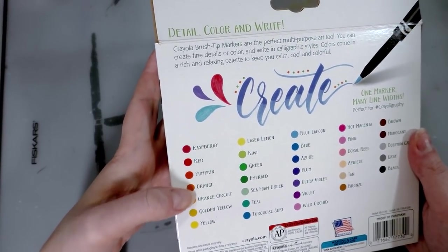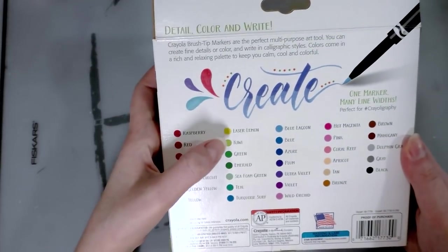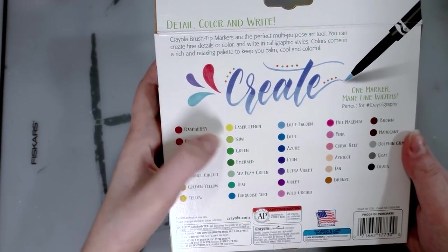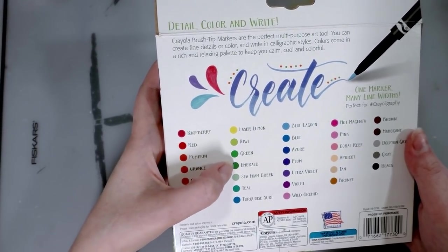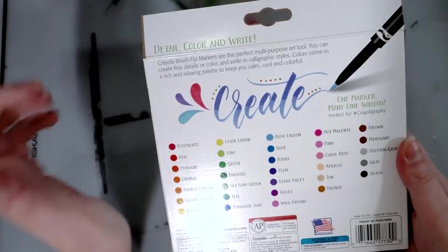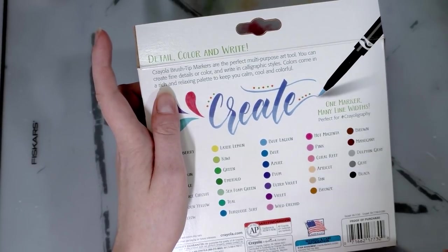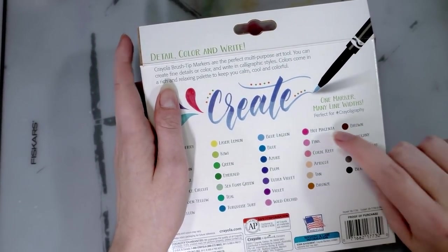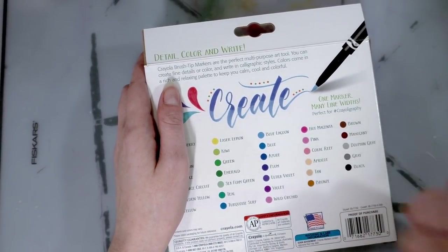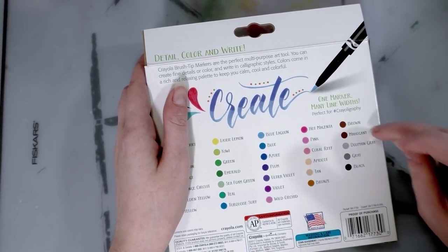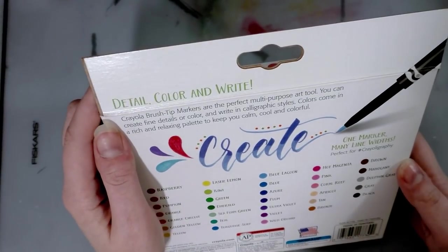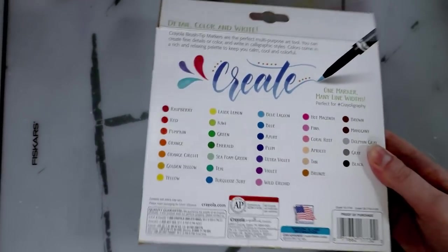The colors inside are raspberry red, pumpkin orange, orange circuit, golden yellow, yellow, laser lemon, kiwi green, emerald, seafoam green, teal, turquoise, surf blue, lagoon blue, azure, plum, ultraviolet, violet, wild orchid, hot magenta, pink, coral reef, apricot, tan, bronze, brown, mahogany, dolphin gray, gray, and black.